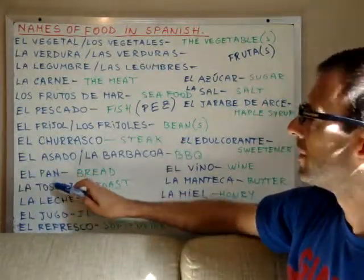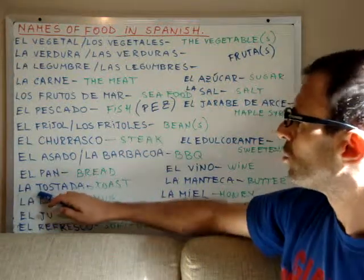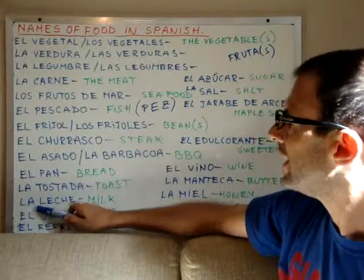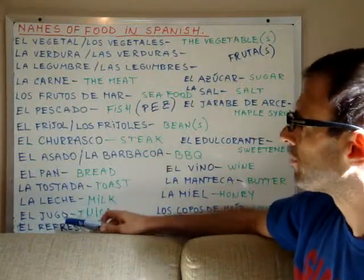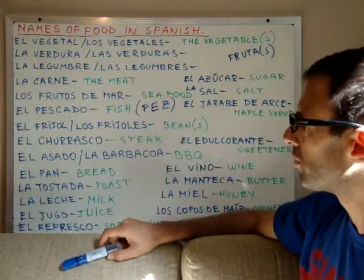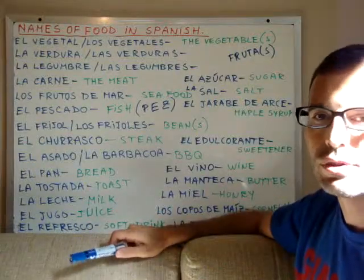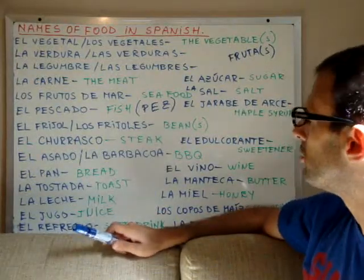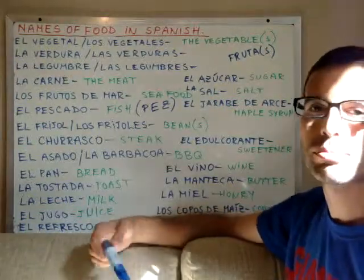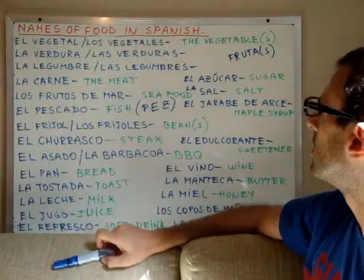El pan means bread. La tostada is toast. La leche is milk. El jugo is juice. El refresco is the soft drink — so refresco can be a Coca-Cola, a Sprite, any bubbly drink.